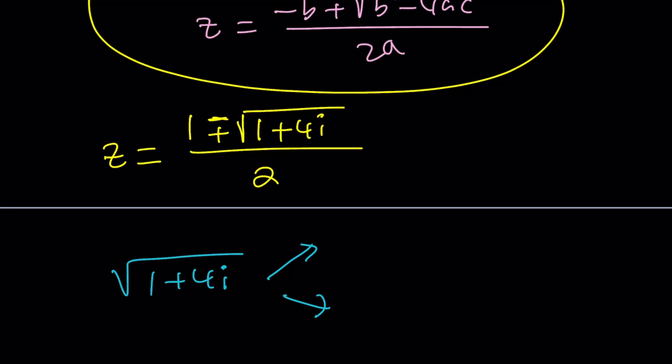By the way, a complex number has two square roots except for zero, right? That's the exception. And if you find one of them, the other one is just going to be the opposite. In other words, plus minus will take care of it.